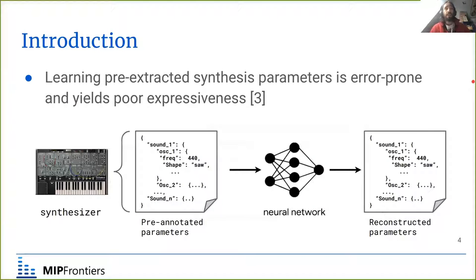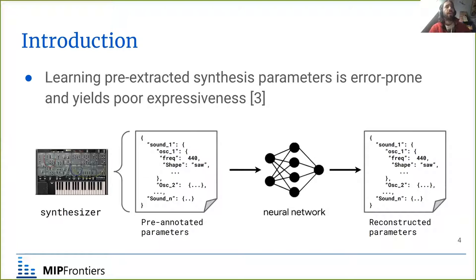A workaround has been to train the model to generate pre-extracted synthesis parameters instead of the audio waveform directly. This involves taking the synthesizer, fine-tuning its parameters to better synthesize a target audio dataset, and then using these parameters as the target in the neural network. Even though this has led to high quality synthesis, such as Jody Bonada's work on a neural network controlled vocoder at the MTG, results still lack expressiveness due to the error-prone fine-tuning process. This is where DDSP comes into play.